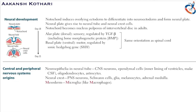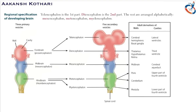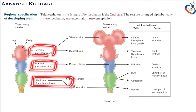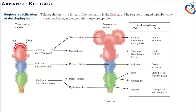Now, talking about the various structures of the brain and how they are formed. The basic embryonic brain has three major parts: the forebrain, midbrain, and the hindbrain. The forebrain is called the prosencephalon, the midbrain is called the mesencephalon, and the hindbrain is called the rhombencephalon. Each has a cavity and an outer wall, both of which form different structures.